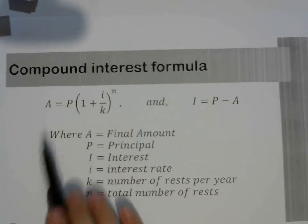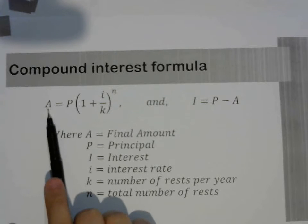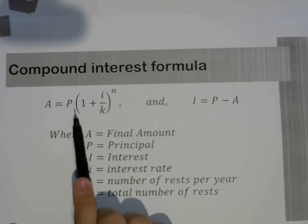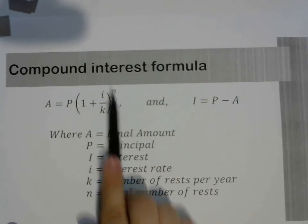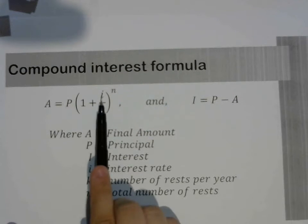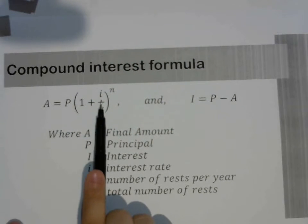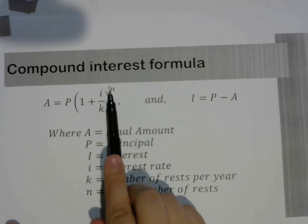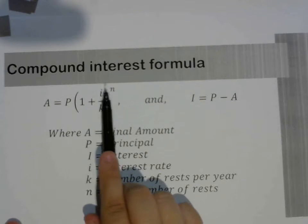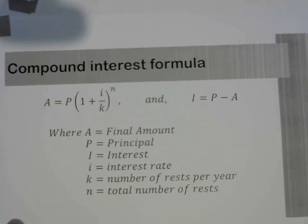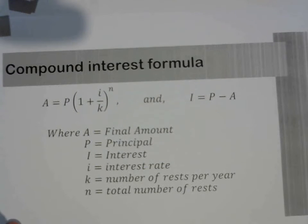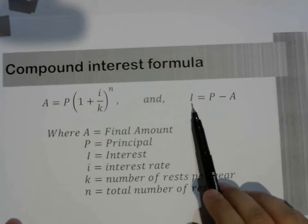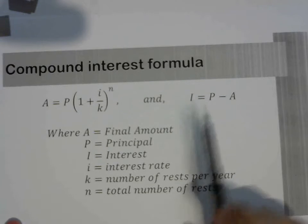The compound interest formula is A, which is the actual amount we paid, equals P, the principal, times, in brackets, 1 plus I, which is the interest rate for the whole year, divided by K, the number of rests or the number of payments per year, close bracket, to the power of N, which is the total number of rests or the total number of payments. And then if you need to figure out what the interest by itself is, you take away the principal from the actual amount.